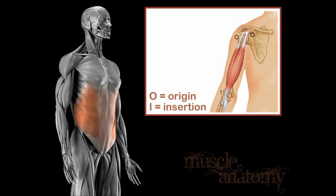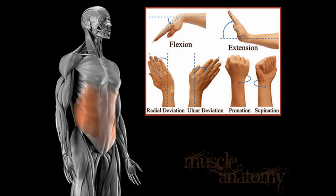Now, some of the actions of the various muscles — I'll be talking about flexion and extension. Remember that flexion is the movement that decreases the angle between two parts, and extension is the reverse.